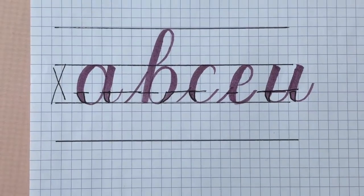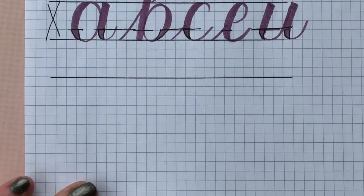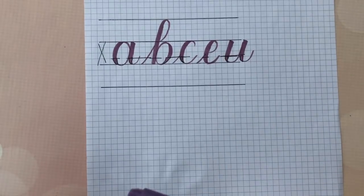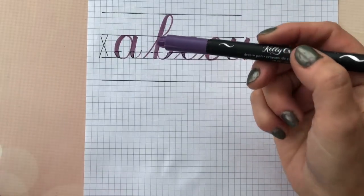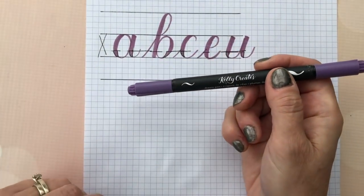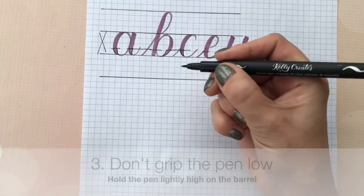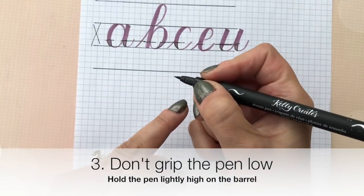The last thing that beginners make a mistake doing is their grip on the pen. Where do you grip a brush pen? You do not hold it near the nib here.